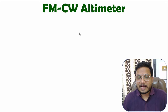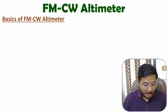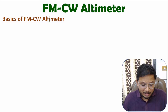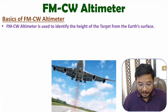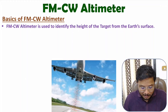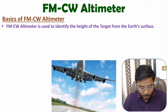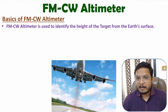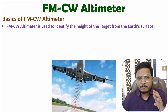Let us begin with the first agenda: basics of FMCW altimeter. FMCW altimeter is FMCW radar, but we use it to identify the height of the target with respect to Earth's surface. Here, one aeroplane is given and at the bottom of the aeroplane, we are attaching an FMCW altimeter. With it, we can identify the height of the aeroplane with respect to the ground plane, by having transmission of signal and echo signal. Usually it is helpful in landing of the aeroplane.